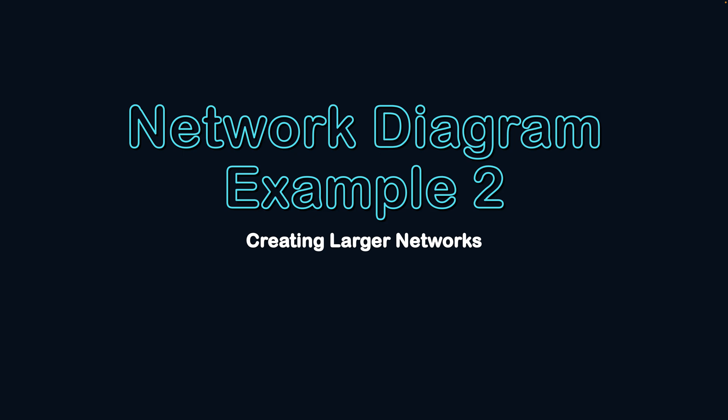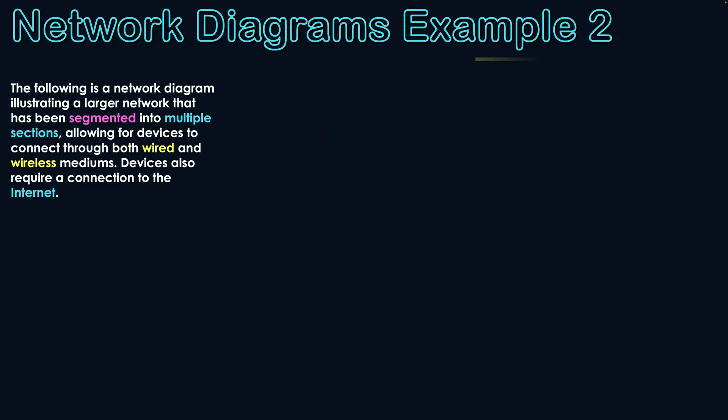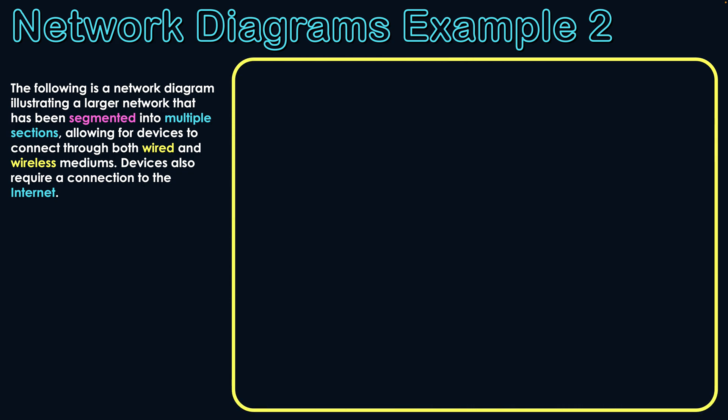Network diagram example two: creating larger networks. The following is a network diagram illustrating a larger network that has been segmented into multiple sections, allowing for devices to connect through both wired and wireless mediums. Devices also require connection to the internet. We're going to take a look at the symbols used in a network diagram representing this setup, including segmentation and how different devices — especially central nodes — are used for different purposes.